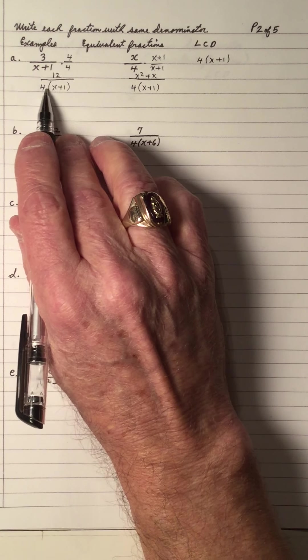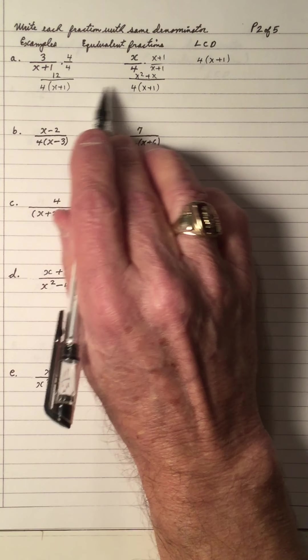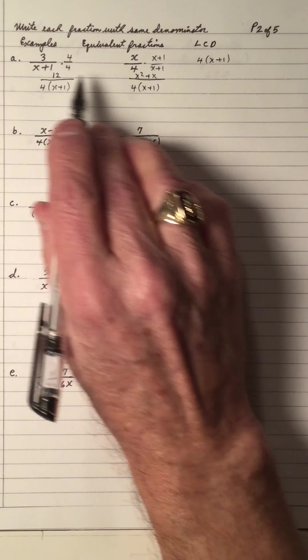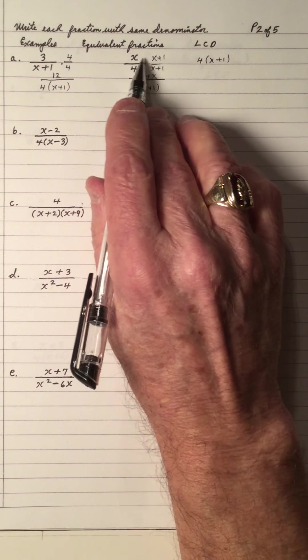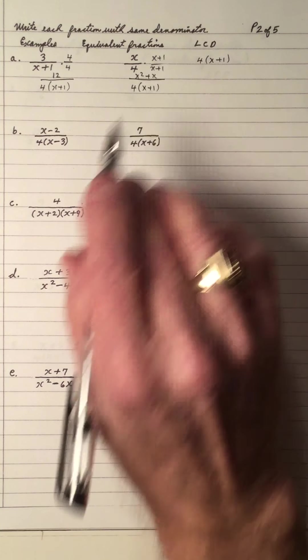Leave the denominators in factored form, like this. But multiply your numerators.